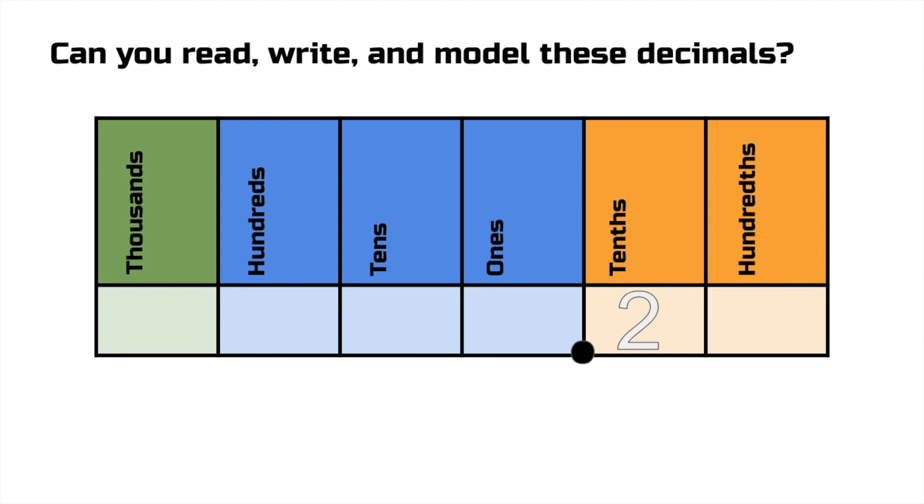Let's do a little bit more practice. How would you read this number? Well, we got a two in the tenths place. So that's simply two tenths. Easy, right? We got an eight in the hundreds place. There's no tenths this time. So we'll just focus on the eight in the hundredths place. That's simply eight hundreds.